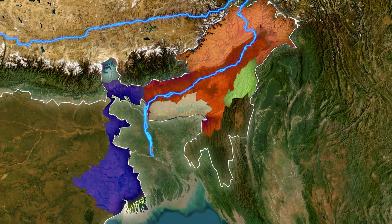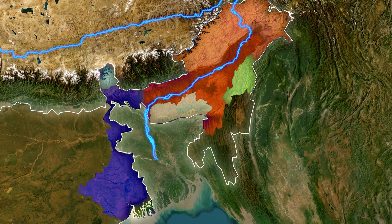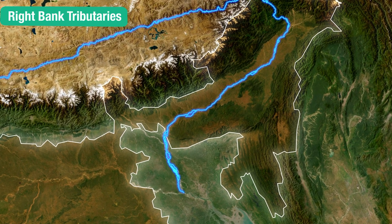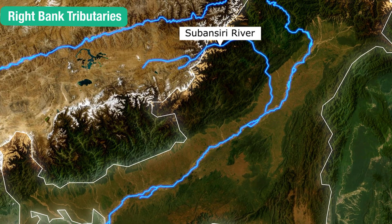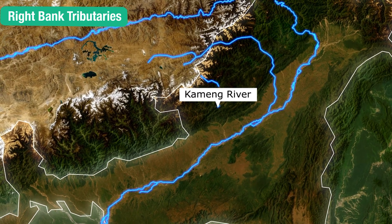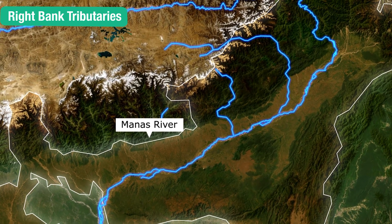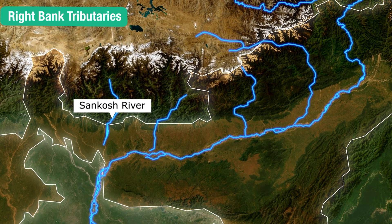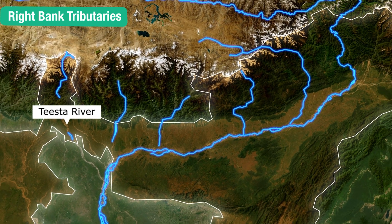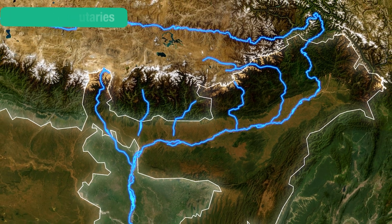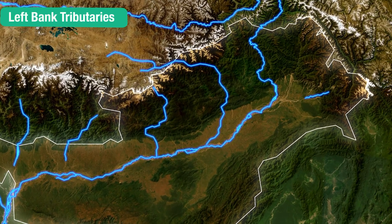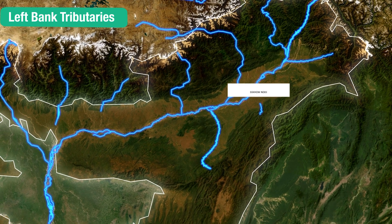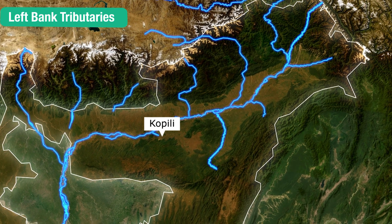The states where the Brahmaputra and its tributaries flow include Arunachal Pradesh, Assam, West Bengal, Meghalaya, Nagaland, and Sikkim. The right bank tributaries include the Subansiri river, Kameng river, Manas river, Sankos river, and the important Tista river. The left bank tributaries include the Lohit river, Dibang river, Dhansiri river, Dhiko river, and Kopili river.